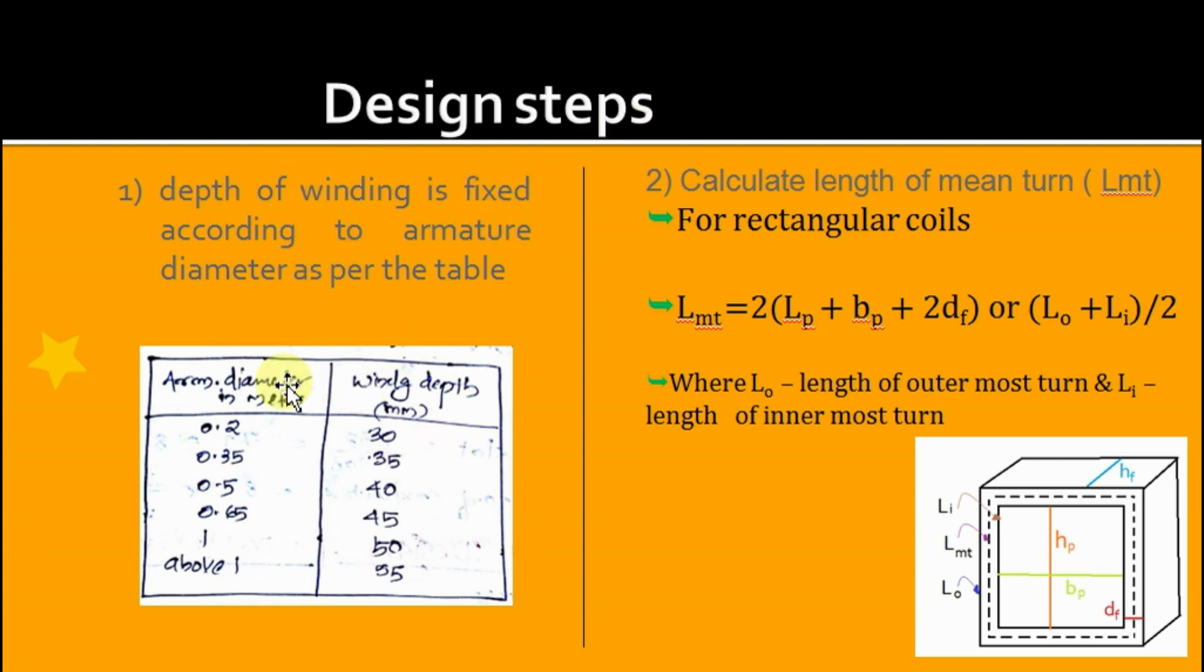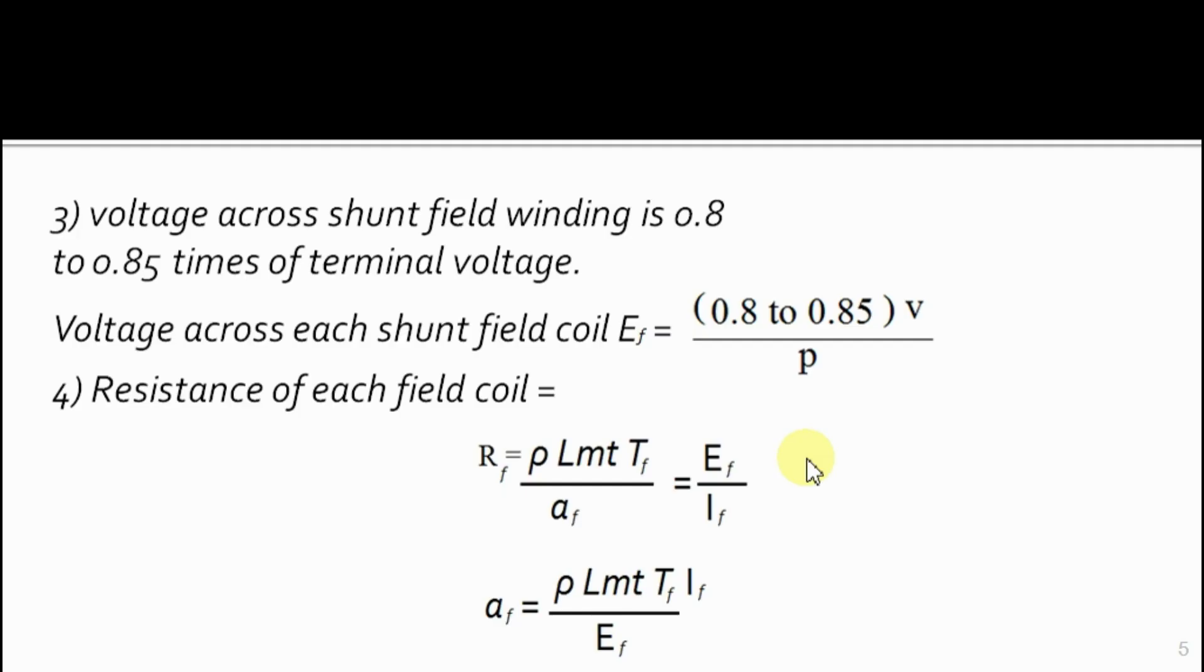Then calculate length of mean turn lmt using the equation below. Voltage across shunt field winding is 0.8 to 0.85 times of terminal voltage. Voltage across each shunt field coil: